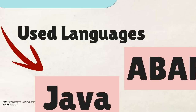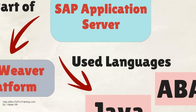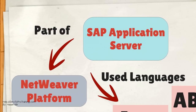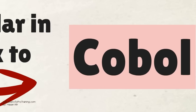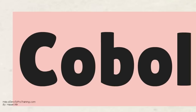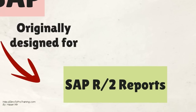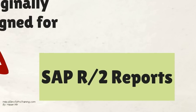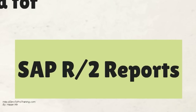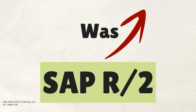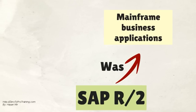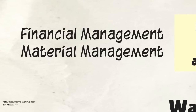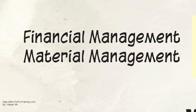ABAP is currently positioned alongside the more recently introduced Java as the language for programming the SAP Application Server, which is part of the NetWeaver platform for building business applications. The programming syntax is similar to that of COBOL. It was originally the report language for SAP R2, a platform that enabled large corporations to build mainframe business applications.